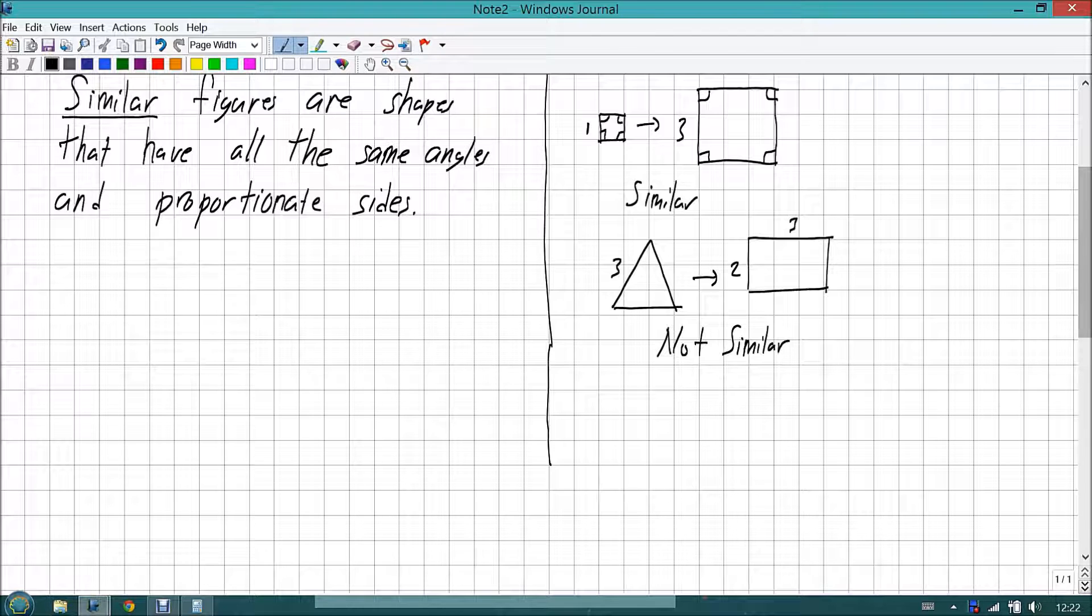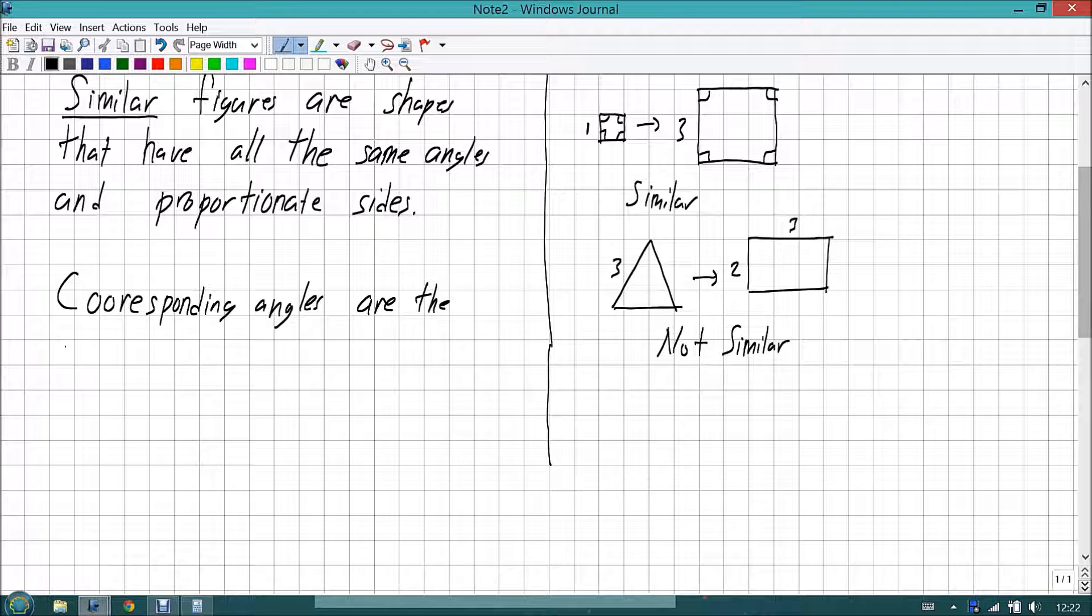Now, a cool thing about this is that corresponding angles are the same angle in each shape. So for an example, if you look at this triangle, we have a right angle right here.